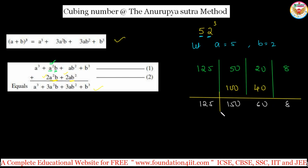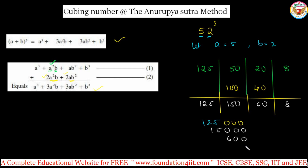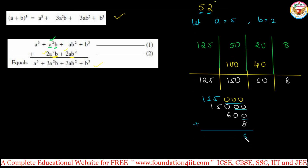Now arrange the numbers by attaching zeros: 125 with three zeros, 150 with two zeros, 60 with one zero, and 8 as is. So we are adding: 125000, 15000, 600, and 8. Adding these all together gives us 140608 — that is 52³.